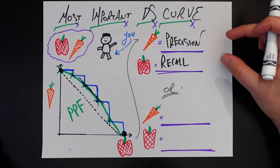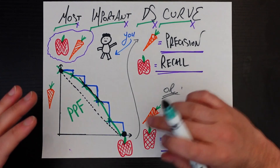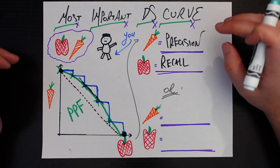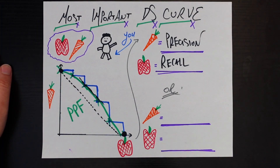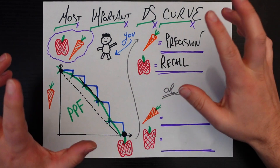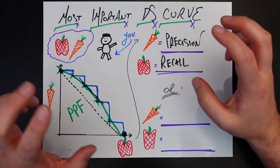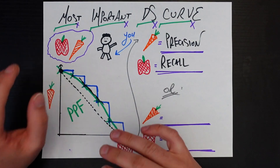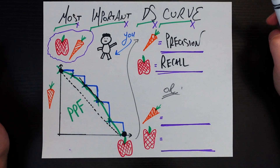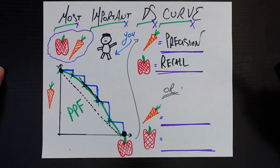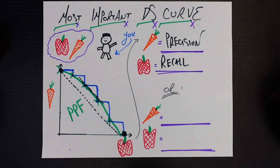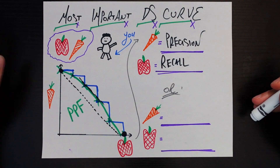Hopefully thinking about the precision-recall curve the same way economists think about the production possibilities frontier gives you intuition into why this matters. It's really the concept of diminishing marginal returns that I wanted to get across — when you're a data scientist, you're usually trying to optimize multiple things at once, and you know that doing more of one leads to a loss in the other. This economic framework gives us a great way to think about that. Let's do one more data science example to show the overarching applicability of this concept.